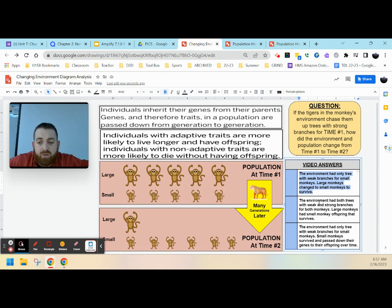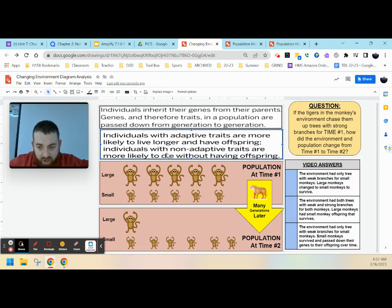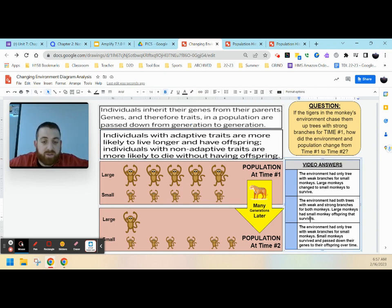Additionally, we also know that individuals with adaptive traits are more likely to live longer and have offspring. Individuals with non-adaptive traits are more likely to die without having offspring. So this idea that larger monkeys had smaller monkey offspring that survived doesn't make sense because they have the non-adaptive traits. They're less likely to survive.